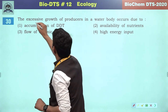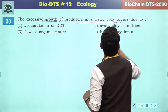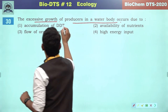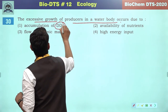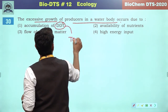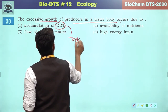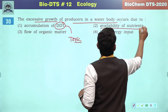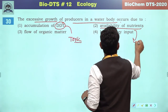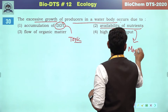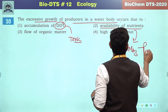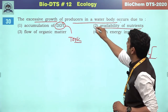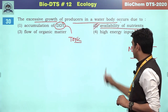The excessive growth of producers in a water body occurs due to accumulation of DDT — that will be toxic and represent biomagnification. The availability of nutrients — specifically nitrate and phosphate — will increase growth. So the second will be the correct answer.